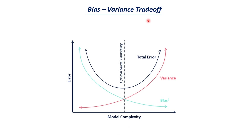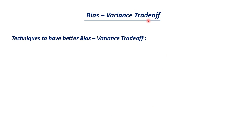There are some techniques to achieve a proper bias-variance trade-off. The first is good model selection. As discussed, using a very simple model leads to underfitting, and using a very complex model leads to overfitting. So good model selection is very important. For a complex problem with no linear relationship, you may use a complex model. When the relationship is linear, you can use a simple linear model. You need to understand the data first — understand the relationship between the various features — and then select your model accordingly. You cannot use a single model for all cases.